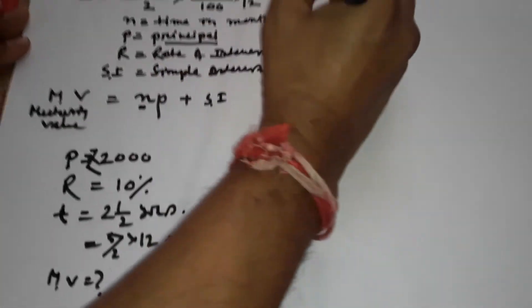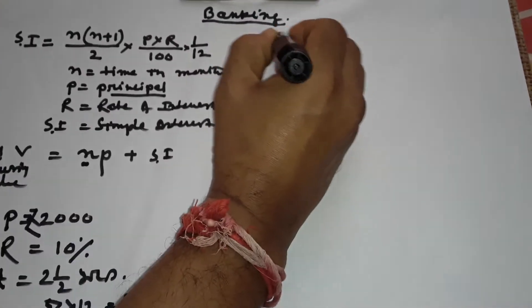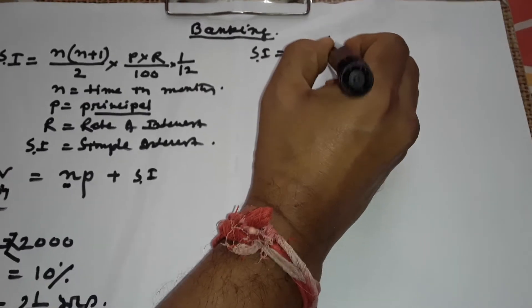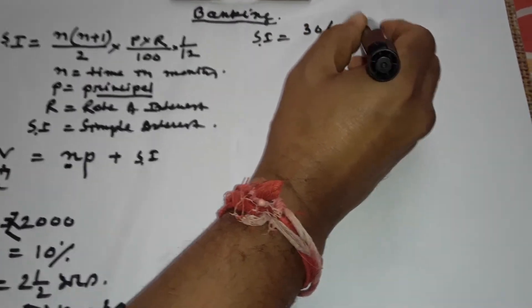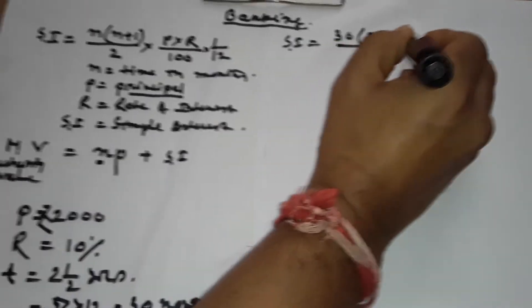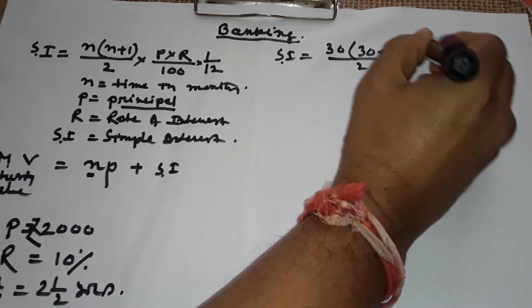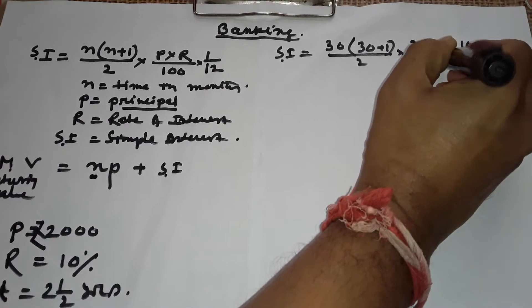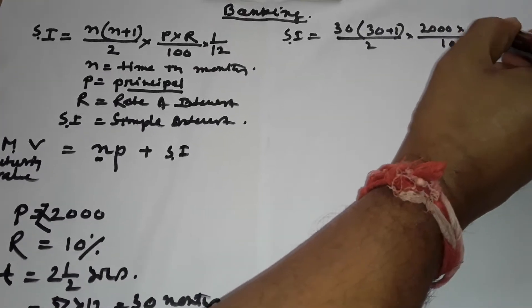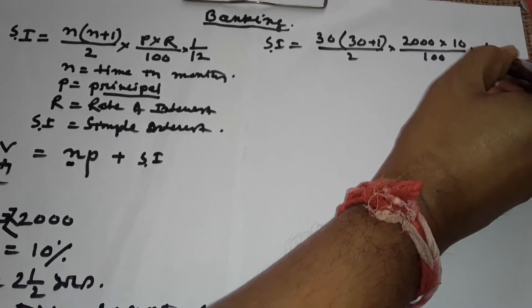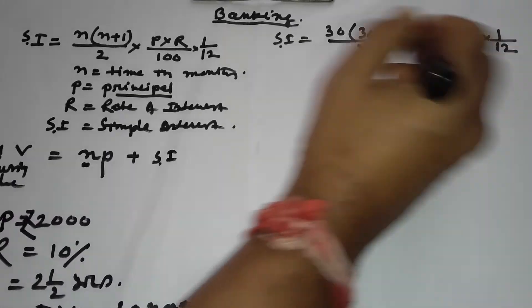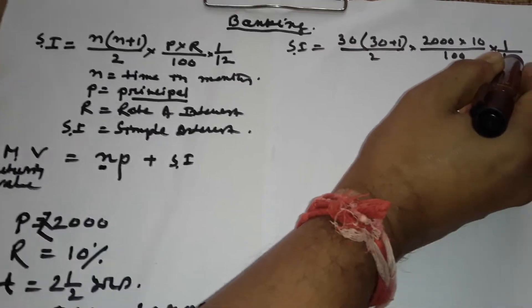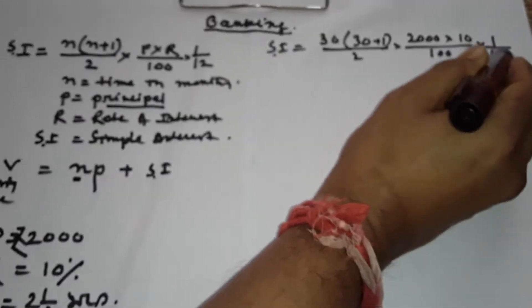First, I find SI. SI = n(n+1)/2 × P × r/100 × 1/12. Substituting: n = 30, so 30 × 31/2, P = ₹2000, r = 10/100, multiplied by 1/12 — because the rate is annual and we convert it to monthly by dividing by 12.